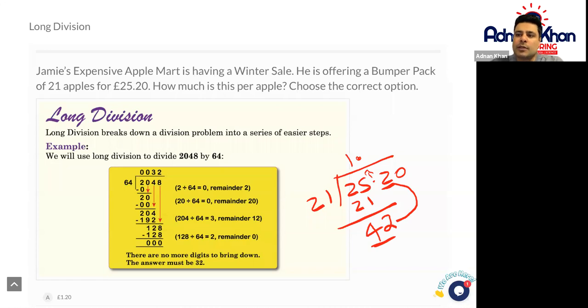Well, 21 goes into 42 twice. So we will now write down here, 21 times 2 is 42. And that's that done.